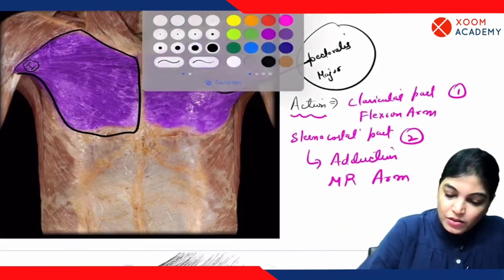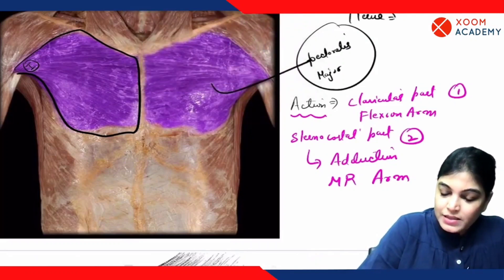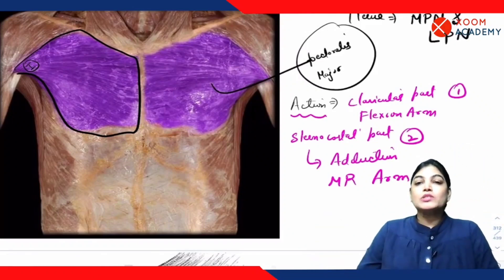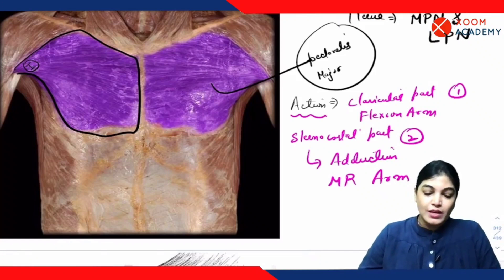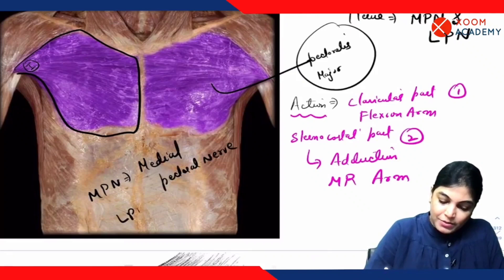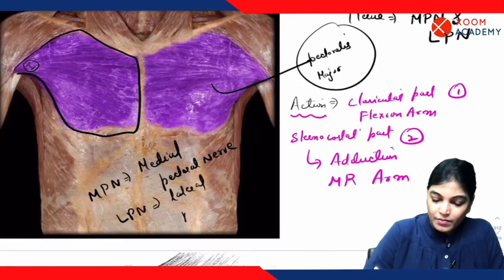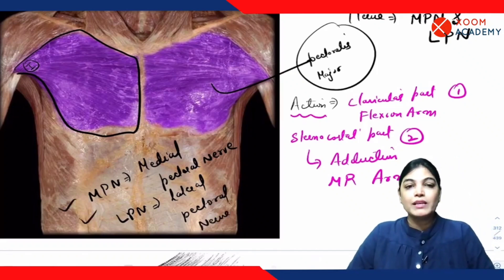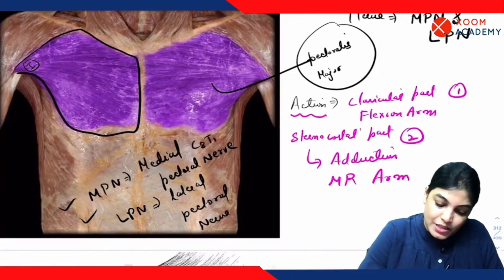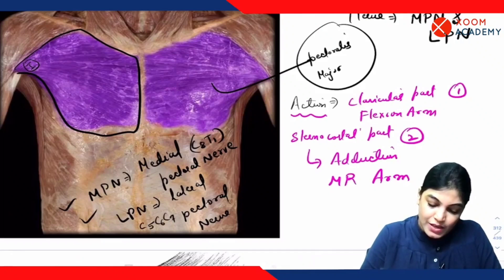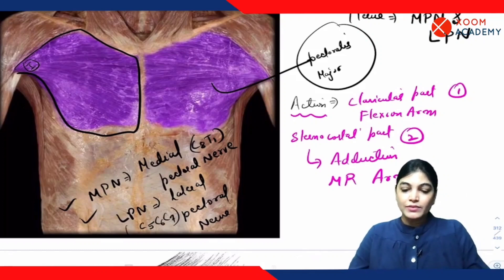Regarding nerve supply, pectoralis major is supplied by both the medial pectoral nerve (MPN) and the lateral pectoral nerve (LPN). The medial pectoral nerve is a branch of the medial cord of the brachial plexus with root values C8 and T1. The lateral pectoral nerve is a branch of the lateral cord of the brachial plexus with root values C5, C6, and C7.